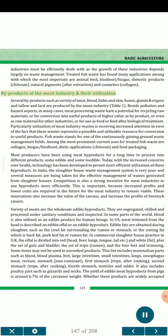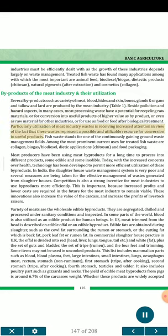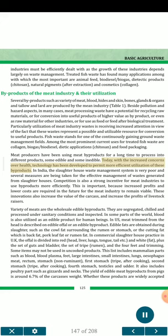By-products of the meat industry and their utilization. Several by-products such as variety of meat, blood, hides and skin, bones, glands and organs, and tallow and lard are produced by the meat industry. Meat processing waste has potential for recycling raw materials, or for conversion into useful products of higher value as by-product, or even as raw material for other industries, or for use as food or feed after biological treatment. Treated fish waste has found many applications, among which the most important are animal feed, biodiesel, biogas, dietetic products, chitosan, natural pigments, and cosmetics/collagen. Meat producers have been using meat by-products for a long time to process into different products, some edible and some inedible. With increased concerns over health, technology has been developed to permit more efficient utilization of these by-products.